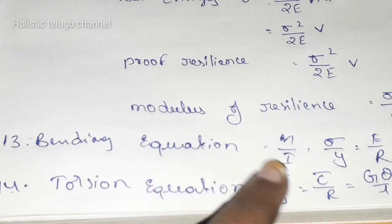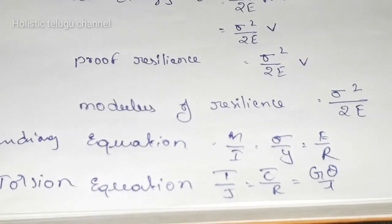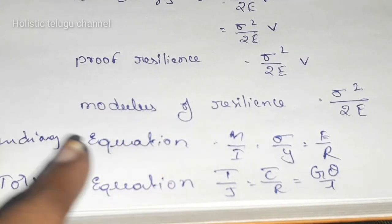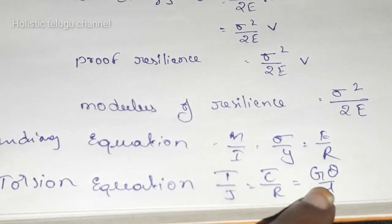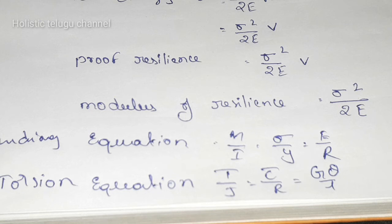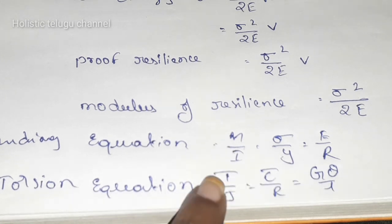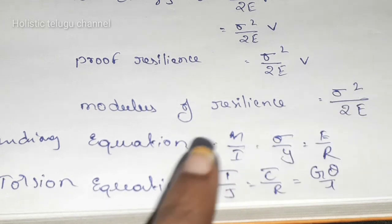Bending equation is M by I equals sigma by Y equals E by R. The torsion equation is T by J equals tau by R equals G theta by L.